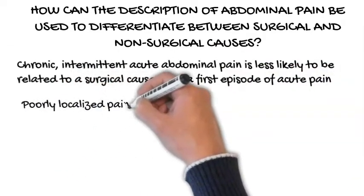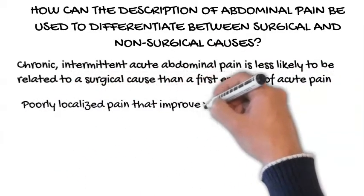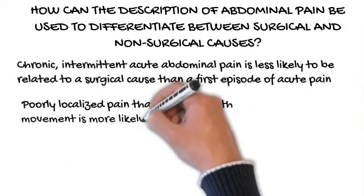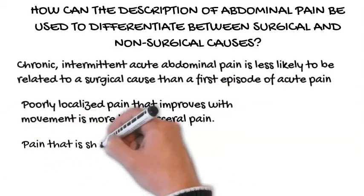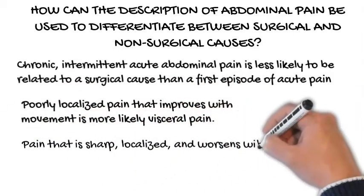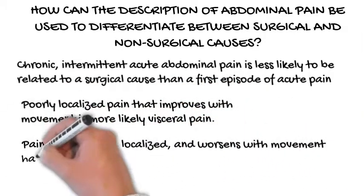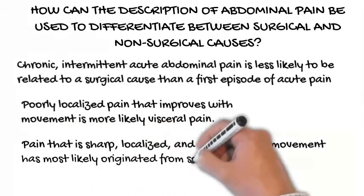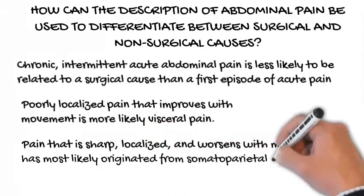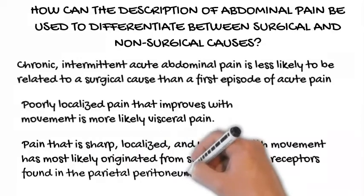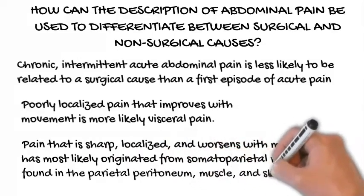Poorly localized pain that improves with movement is more likely visceral pain. Pain that is sharp, localized, and worsens with movement has most likely originated from somatoparietal receptors found in the parietal peritoneum, muscle, and skin.